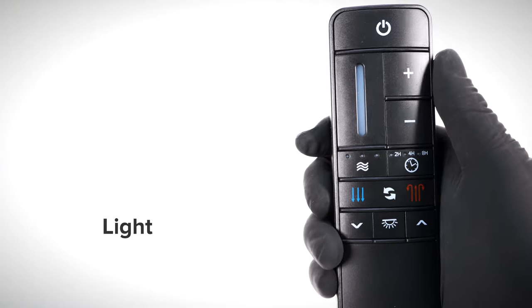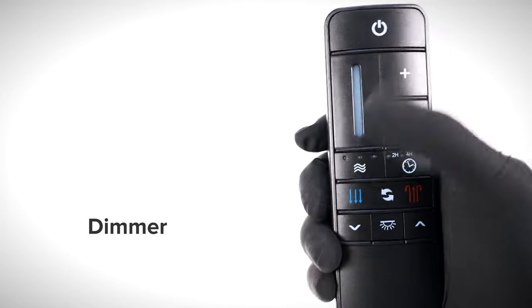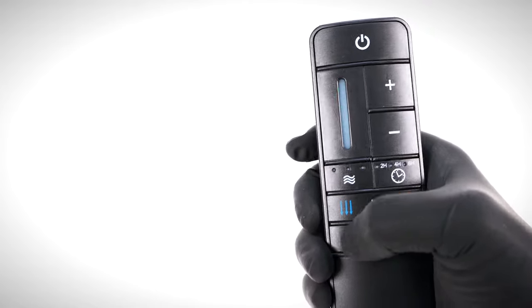The light button turns the light on or off. The dimmer buttons allow you to increase or decrease the brightness of the light.